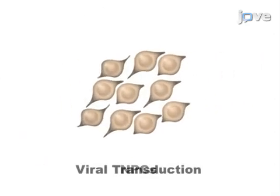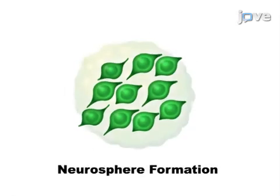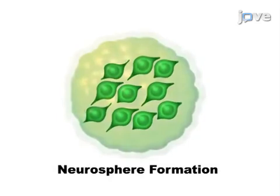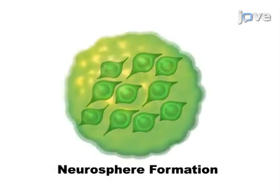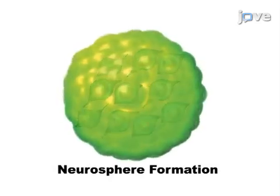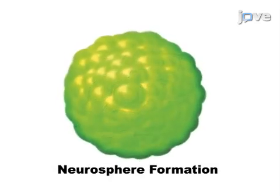Next, lentiviral transduction with a spinfection step to improve efficiency is used to manipulate gene expression. The final step is to grow the NPCs in suspension so that they spontaneously form neurospheres.